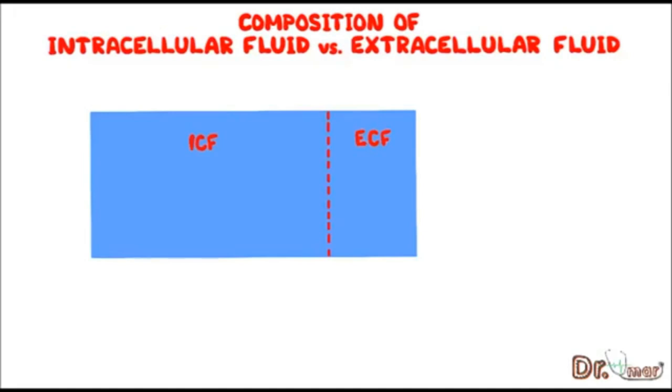As I already said, the major cation in extracellular fluid is sodium, and the balancing anions are chloride, bicarbonate, and phosphate. Sodium creates the most osmolarity of the extracellular fluid.